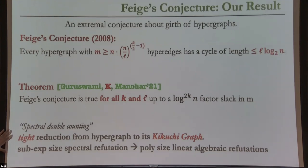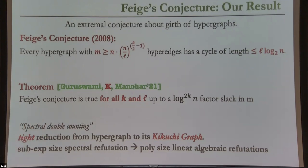These high-level terms are meant to evoke memory associations once I tell you how we prove this. We call the key idea spectral double counting, which seems like an interesting new method to prove such combinatorial statements. There are two key important points: first, there is a way to reduce hypergraph problems to graph problems in a non-lossy way — I'll tell you exactly what the Kikuchi graph construction is. Second, there's a tight connection between the success of spectral refutations in sub-exponential time and the existence of hypergraph cycles.